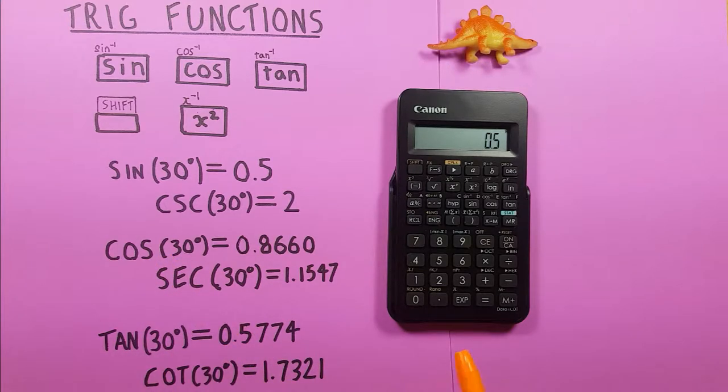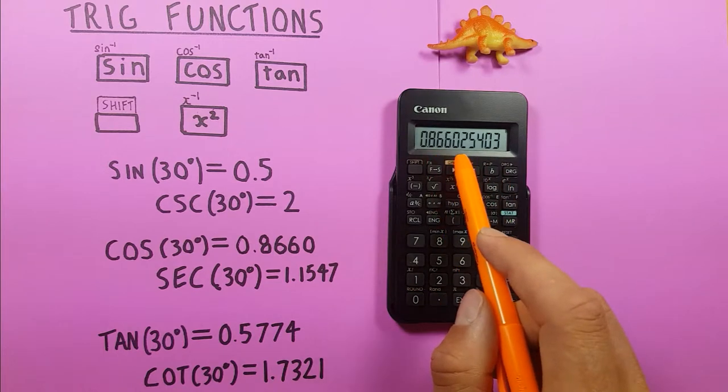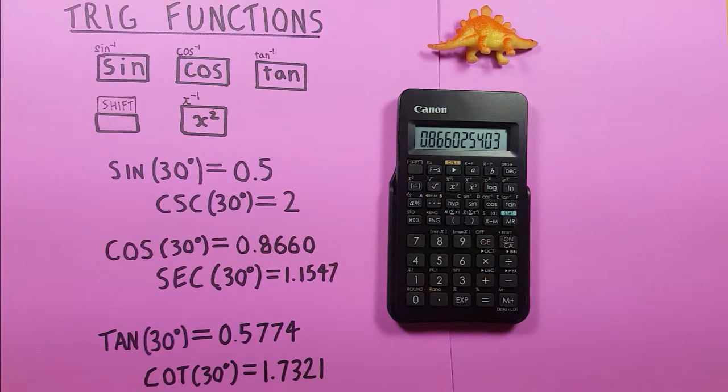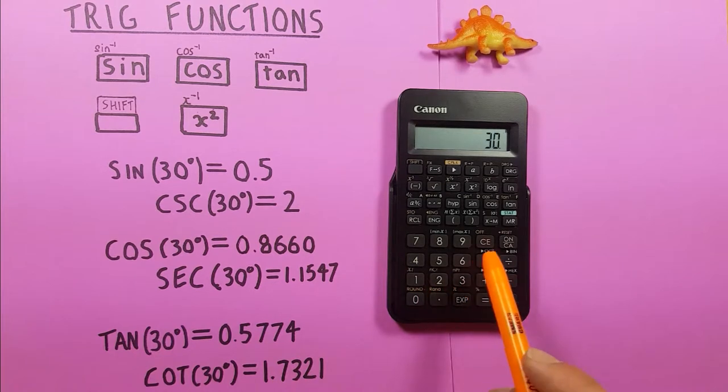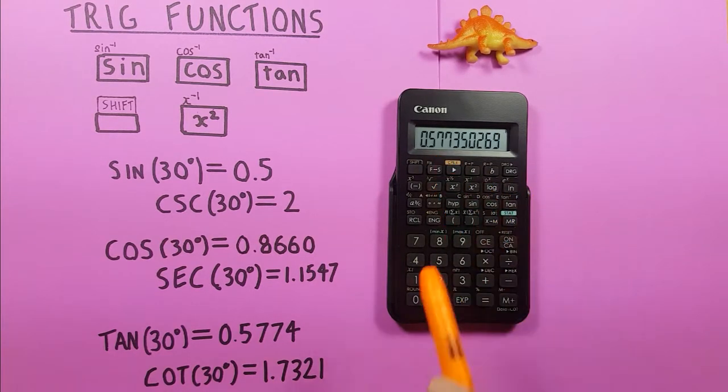Same thing for cosine. We enter the 30 press cos and you can see the cosine of 30 degrees is 0.8660. And for tan same thing, place the 30 on there and press tan and we get 0.5774.